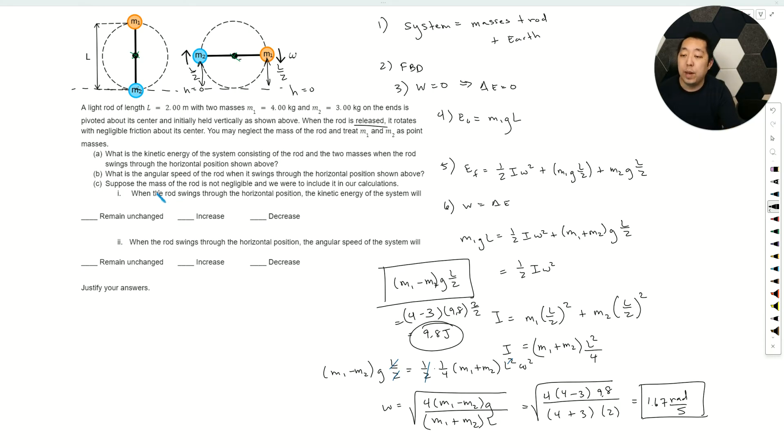Part C: Suppose the mass of the rod is not negligible and we were to include it in our calculations. When the rod swings through the horizontal position, the kinetic energy of the system—well, the kinetic energy is just how much potential energy we started with. So the kinetic energy remains unchanged because we started with the same potential energy. We're going to end with the same kinetic energy. However,